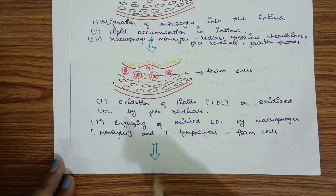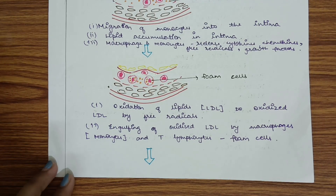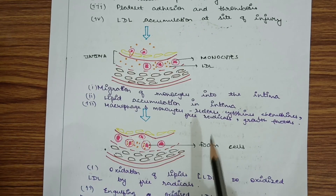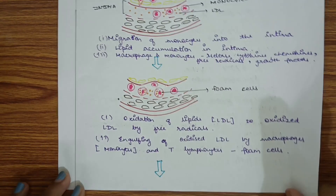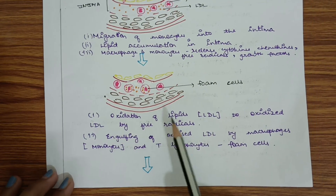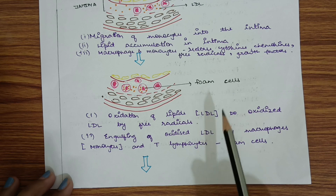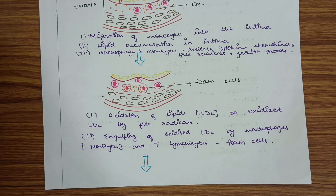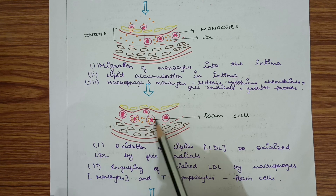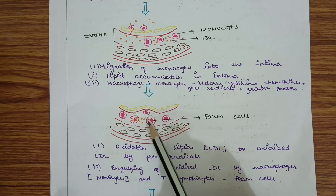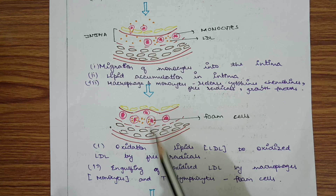After lipid accumulation, there will be oxidation of these lipids. Free radicals generated by macrophages and monocytes oxidize the LDL to form oxidized LDL. This oxidized LDL is then engulfed by macrophages and T-lymphocytes to form cells known as foam cells.